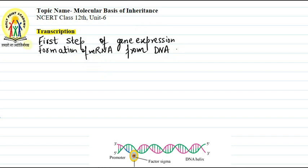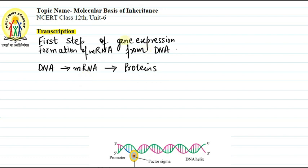The flow of genetic information is from DNA to RNA to protein. mRNA is produced from DNA by the process of transcription. And proteins from mRNA are produced by the process of translation. So these two processes — transcription and translation — are very important for the expression of the gene.